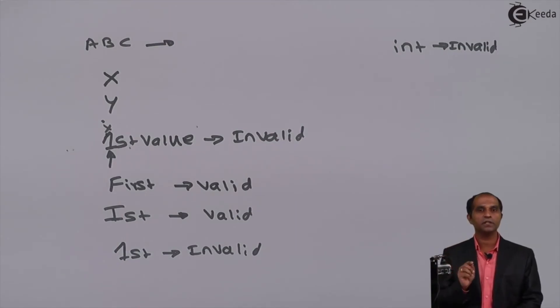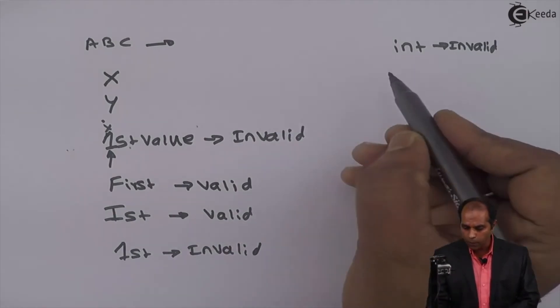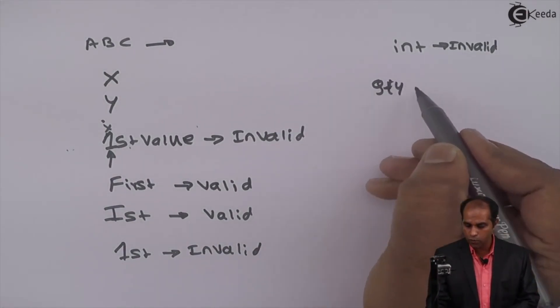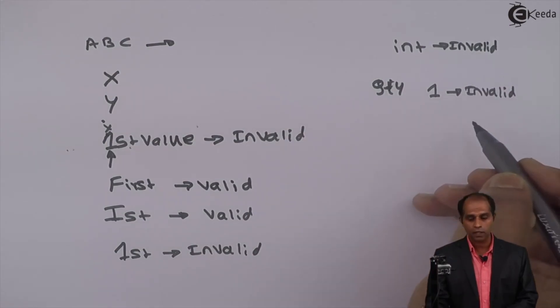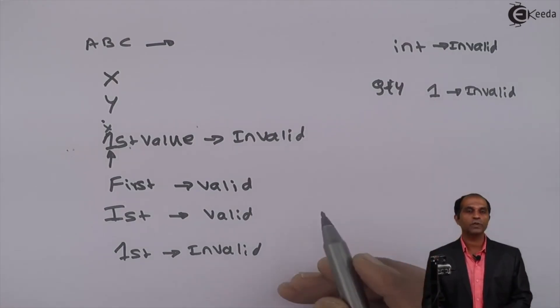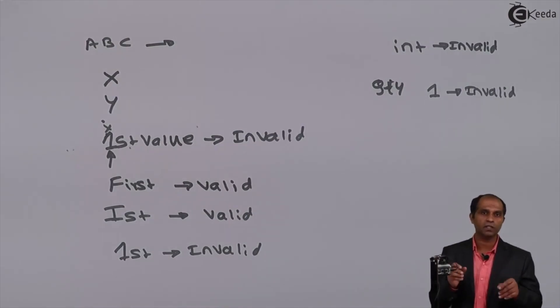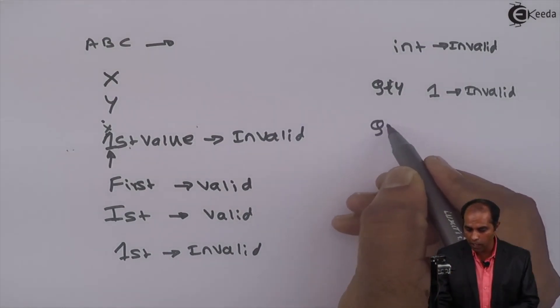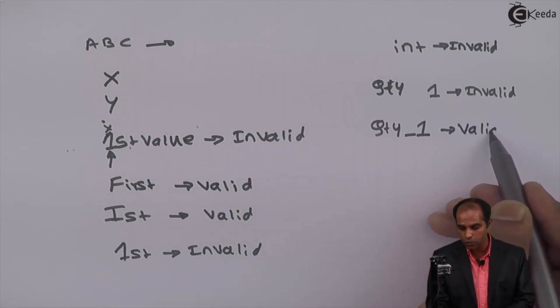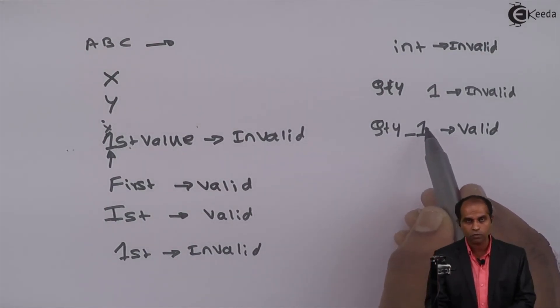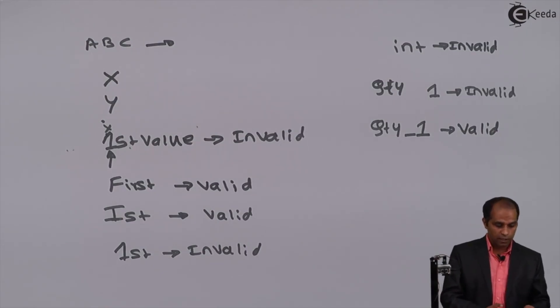What if I have a name that needs blank spaces? In that case, you can change the name as QTY_1. Now this is a valid variable name because it contains alphabets, an underscore symbol, and a digit. Whenever you feel the name you're selecting for a quantity should have blank spaces, don't put a blank space—use an underscore symbol. That's it about identifiers or variables. Thank you.